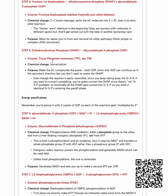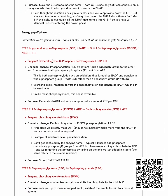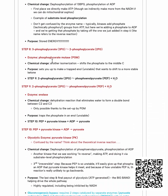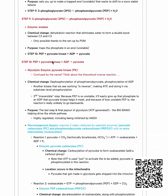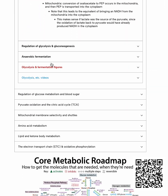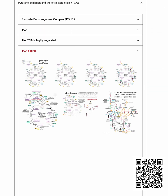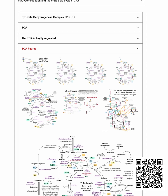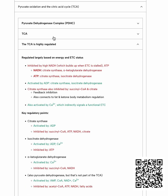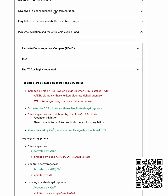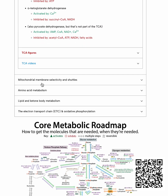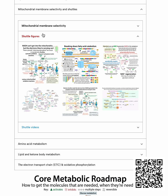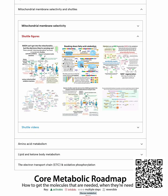What's the chemical logic of the steps of glycolysis? What are the things to look for? Where are you generating energy? What are the points of regulation? We have the citric acid cycle as well, and things related to the regulation of that. We've got the mitochondrial membrane selectivity — what can and can't go out of the mitochondria, and how do we shuttle things in and out.